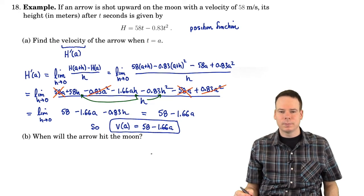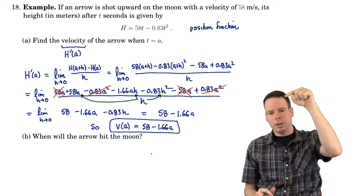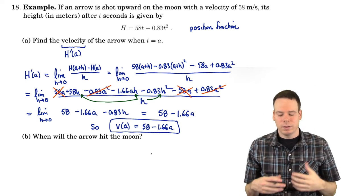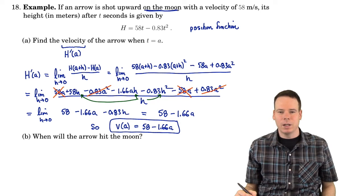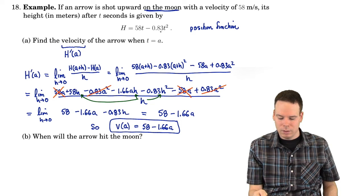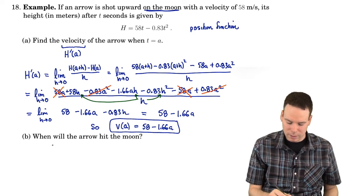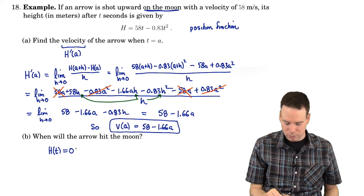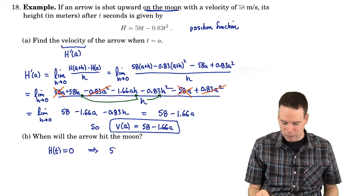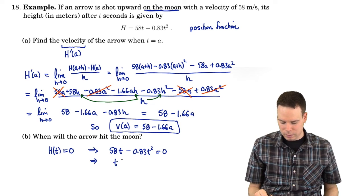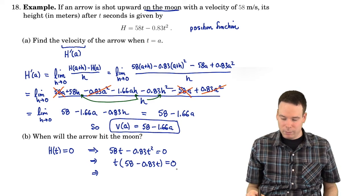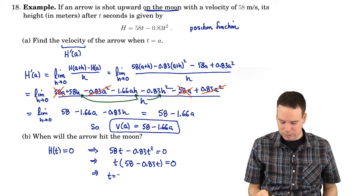And the next question says when will the arrow hit the moon? So you launch the arrow up, it goes up, it comes back down. When does it hit the moon? Well, assuming that you shot it upwards on the moon, so you're standing on the moon. When it comes back to the moon means when it lands at the same height it was launched from. And so we're really interested in when the height is 0. When is this 0? Well, that's 0 when 58t minus 0.83t squared is 0. And that I can factor out a t from.